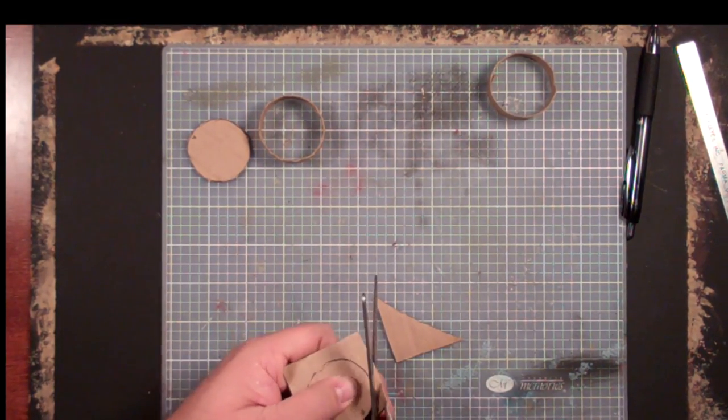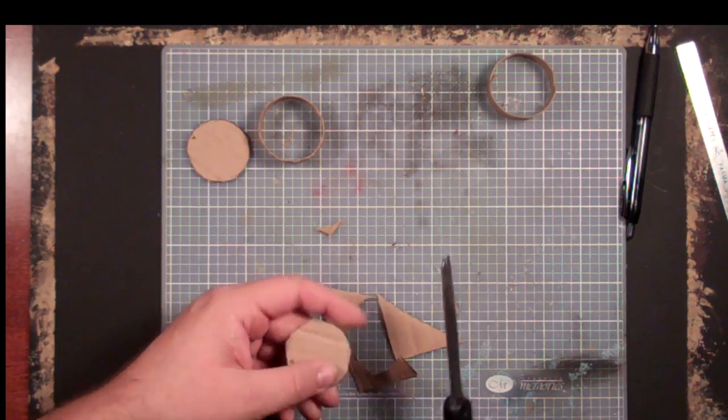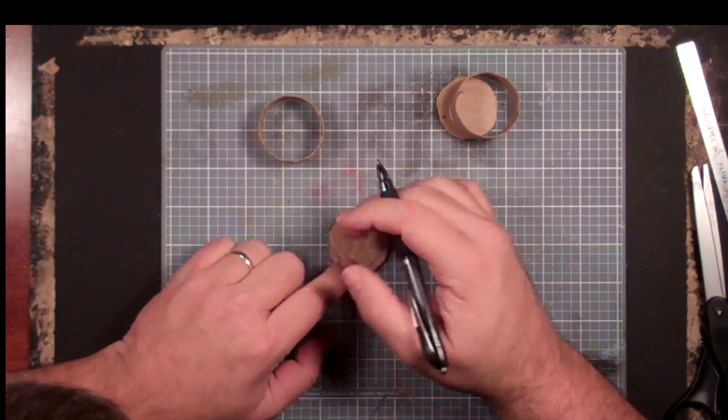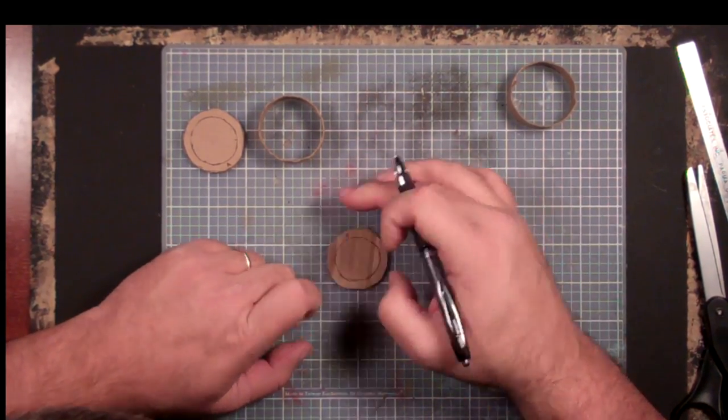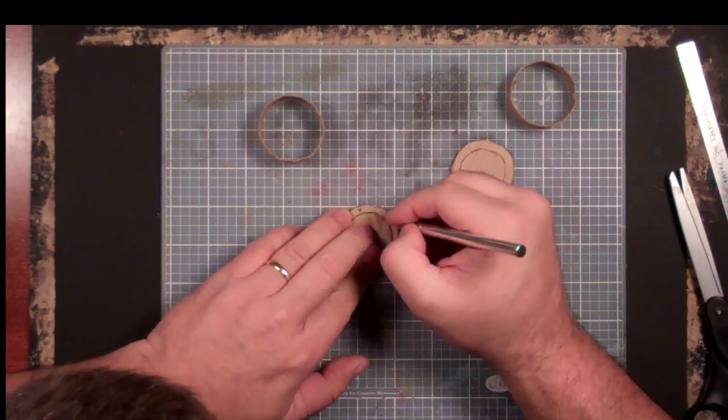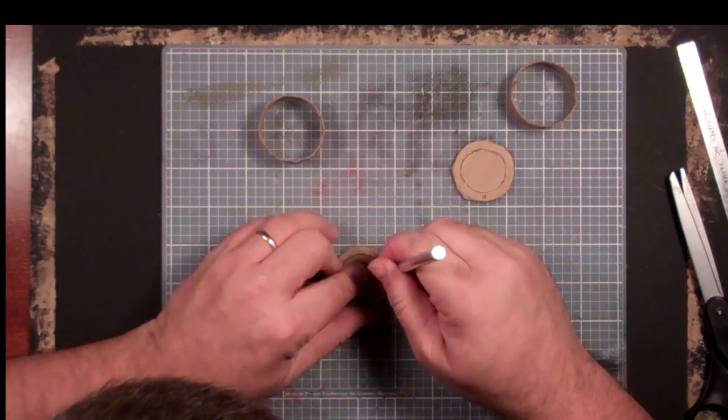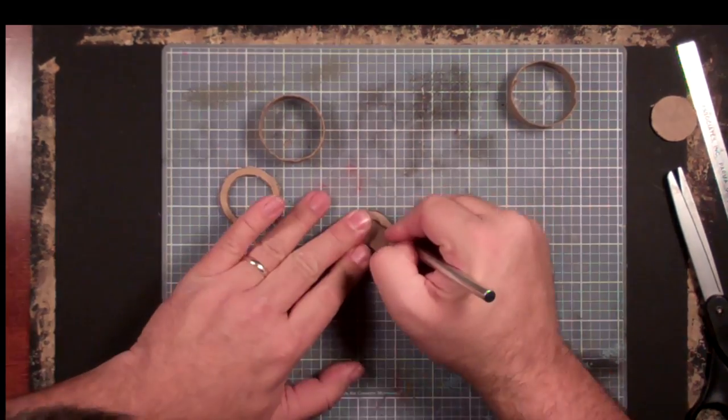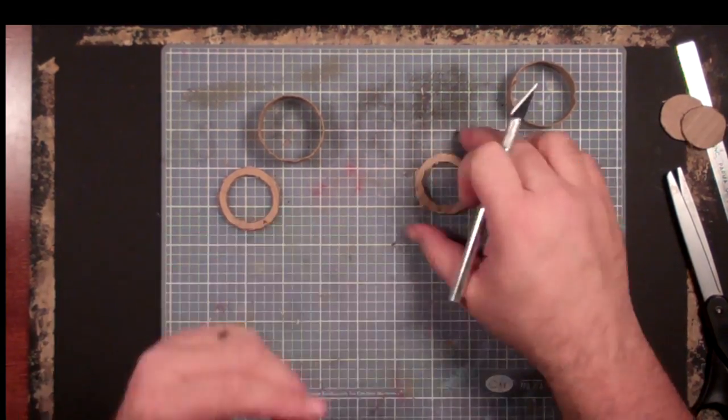Now I'm using a standard corrugated cardboard here. The reason for this is we're going to use the corrugation in a few minutes for the actual grate bars. Now I just kind of eyeballed this. It's approximately a quarter inch. You don't want to go too much smaller than that or you'll compromise the integrity of your grate. And then I use my hobby knife to cut out the interior, leaving me with a ring. Again, be careful not to cut yourself because you are pressing pretty hard.